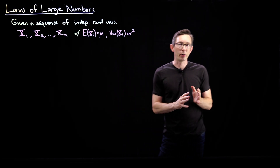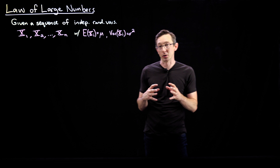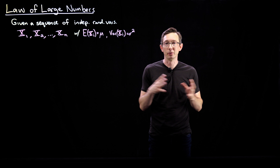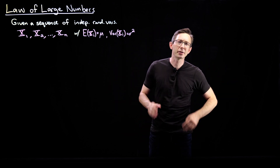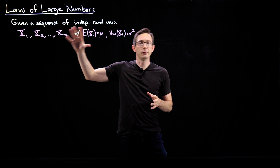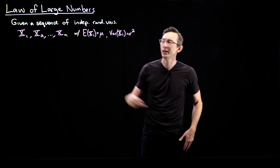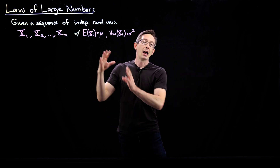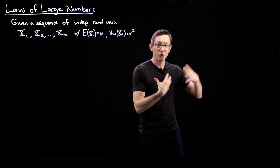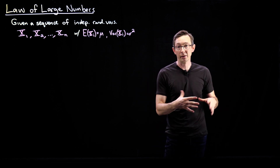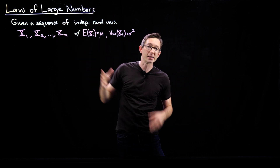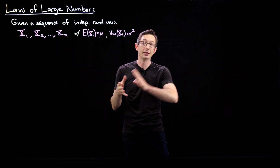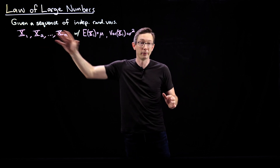We're getting to a pretty exciting point in this short course on probability theory, where now we can start making some very general statements about large numbers of random variables. These are called limiting theorems, and the first one — the one you've almost certainly seen before and is very intuitive — is the law of large numbers. This is the first and simplest in these limiting statements you can make about sequences of random variables in the large n limit.